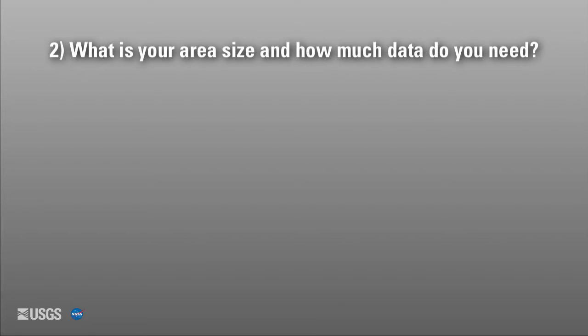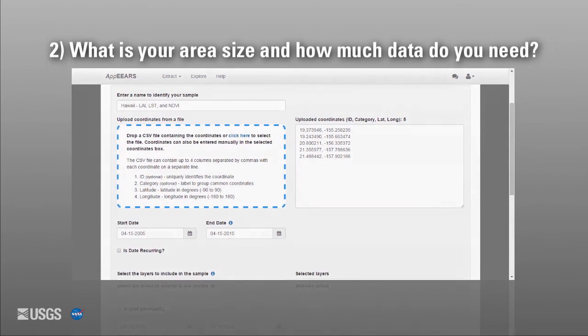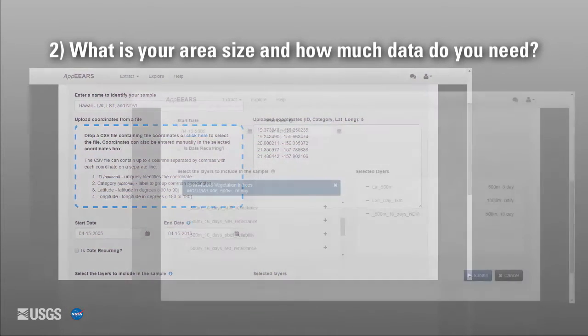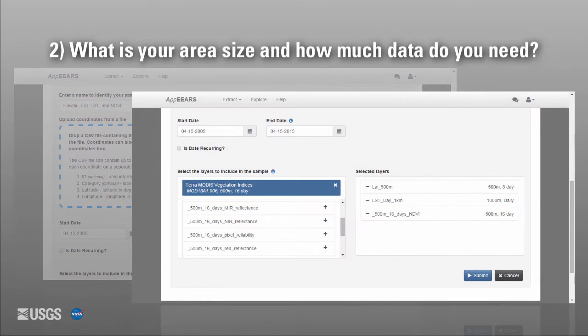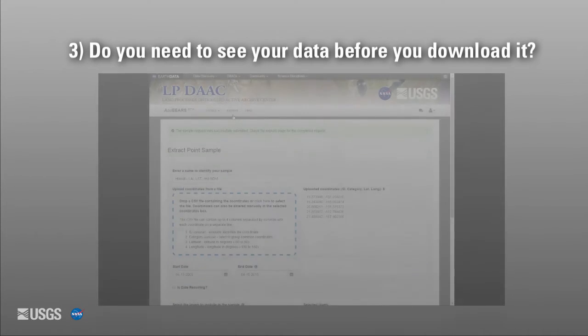What is your area size and how much data do you need? With APPEARS, you can retrieve pixel values for point locations over a time series for several layers. There are no restrictions to the number of points you can request in a sample, nor are there any data download limits.